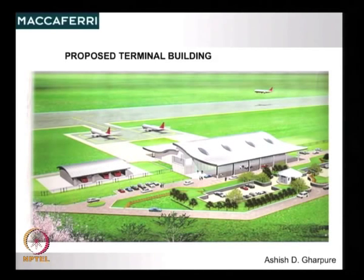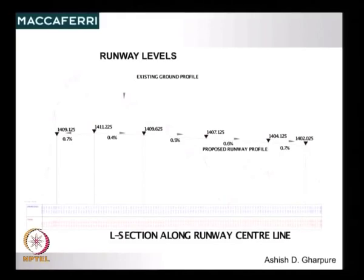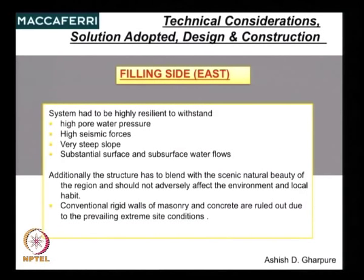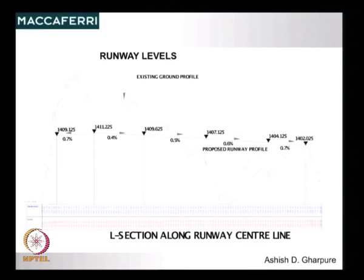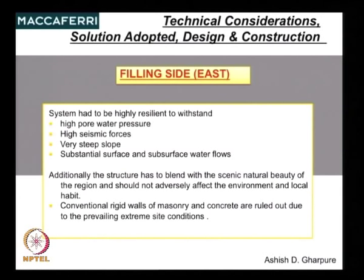The proposed terminal will be a small terminal — an ATR 65-seater aircraft will land here because we could not go for a full-size runway. There is a complete cross-section shown but it is difficult to see. The cut and fill were balanced.